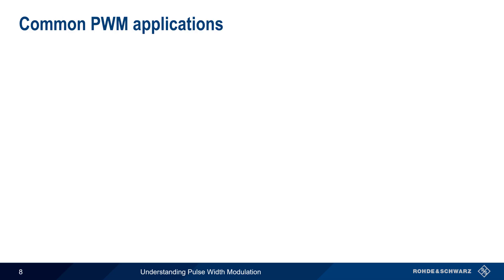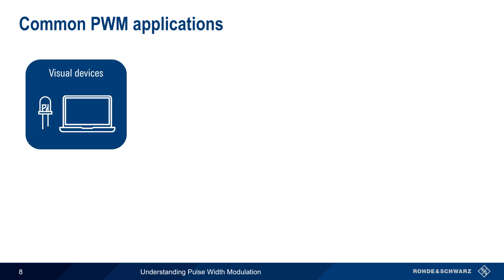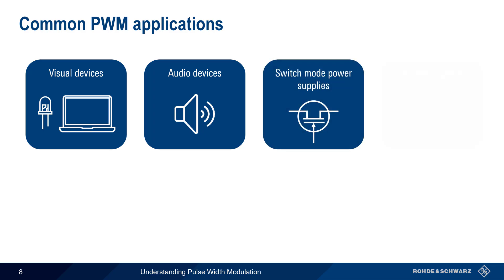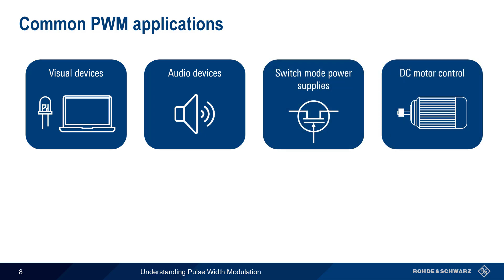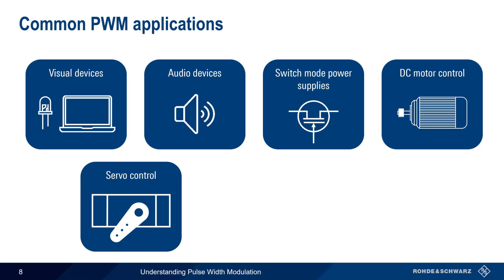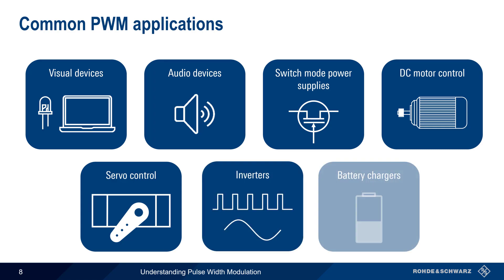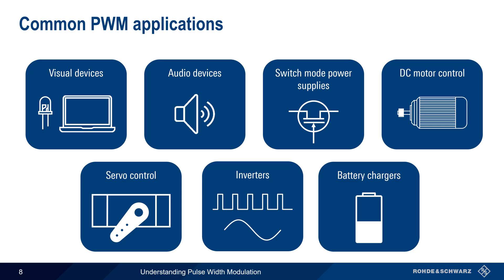Now let's take a brief look at common applications that use pulse width modulation, namely visual devices, audio devices, switch mode power supplies, DC motor control, servo control, DC to AC inverters, and battery chargers. There are many other applications, but in the interest of time, we'll limit ourselves to these examples.